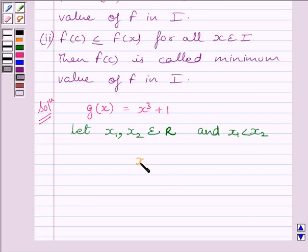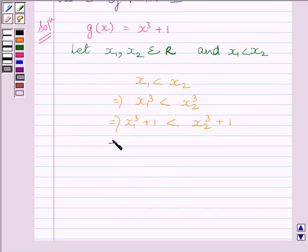Now, x₁ < x₂ implies x₁³ < x₂³. This implies x₁³ + 1 < x₂³ + 1. Now, this implies g(x₁) < g(x₂), since x₁³ + 1 = g(x₁) and x₂³ + 1 = g(x₂). So, we get g(x₁) < g(x₂).